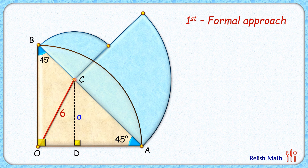In triangle CDA, angle C is 45 degrees, and therefore DA length will also be 'a' centimeters. By the Pythagorean theorem, CA will be a√2 centimeters, and thus a√2 is the radius of this big brown quadrant.